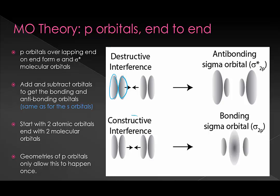Let's look at constructive interference first. If we overlap with constructive interference, we get a bonding orbital — with our nuclei here, most of our electron density is in the center. Now if we look at what happens with destructive interference, most of our electron density is actually on the outsides of our nuclei, which means electrons in the anti-bonding orbital subtract from the bond order. Notice, just like with the s orbitals, we started with two atomic orbitals and ended with two molecular orbitals.